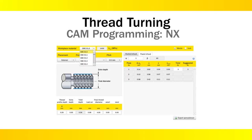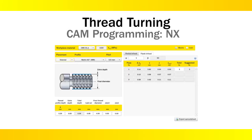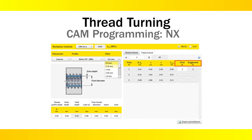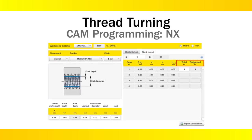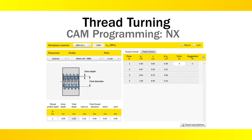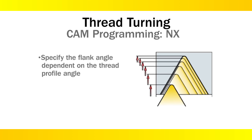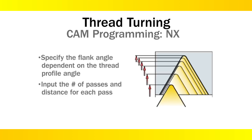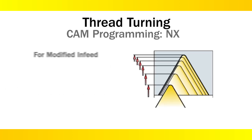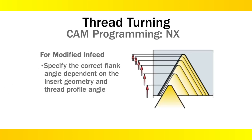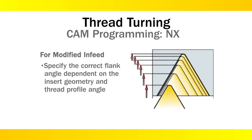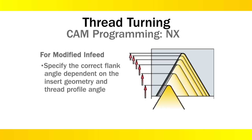The thread turning calculator is available for use from Sandvik Coromant. It calculates the correct number of passes and decreasing depth per pass for modified flank and radial infeed thread turning methods. Set your parameters for the type of thread profile and thread pitch to get the ideal number of passes and decreasing depth per pass for radial infeed, and the Z offset per pass for modified flank. For modified flank infeed, be sure to specify the correct flank angle dependent on the insert geometry and thread profile angle being machined.